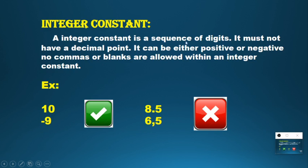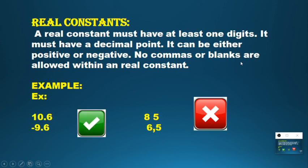An integer constant is a sequence of digits and it must not have a decimal point. It can be either a positive or negative number. No commas or blank spaces are allowed. For example, -9 and 10 are accepted, but 8.5 is not accepted, and 6,5 with a comma is also not accepted. Integers accept digits, positive or negative, but not decimals.